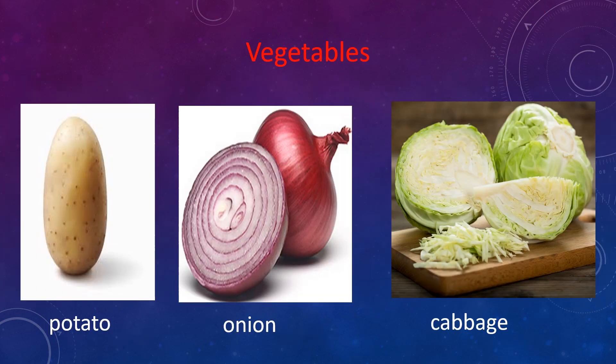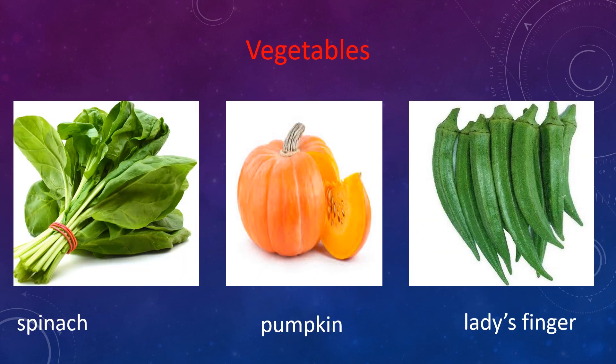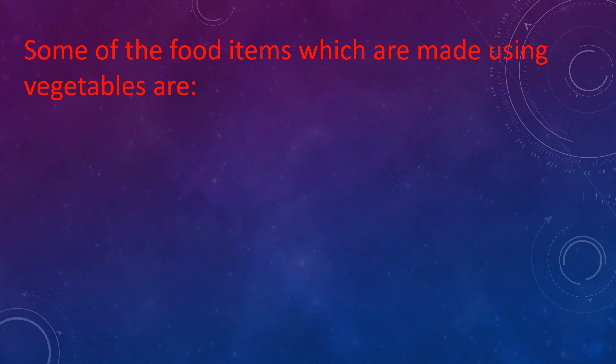Plants are a source of food for us in the form of vegetables too. To name some of the vegetables, you can see potato, onion, cabbage, cauliflower, radish, carrot, spinach, pumpkin, lady's finger, etc. Some of the food items which are made using vegetables are cooked vegetables and soups.